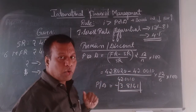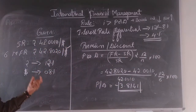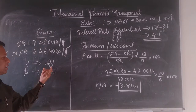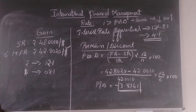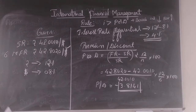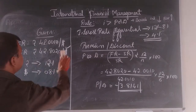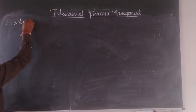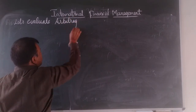Since interest rate differential is greater than the premium or discount, we should borrow in the country where interest is less and park money in the country where interest is high. In this case, interest rate is low in the US and high in India — so we borrow in the US and park the amount in India. The rate differential of 4 percent is greater than the premium or discount, hence there is a possibility of arbitrage with inflow in India. Let's evaluate the arbitrage possibility.